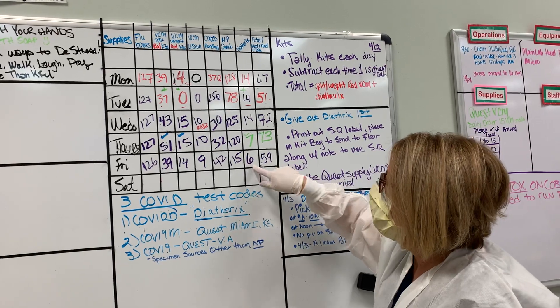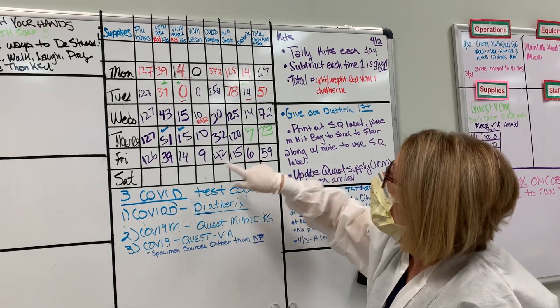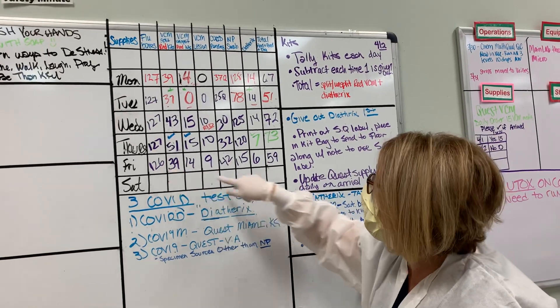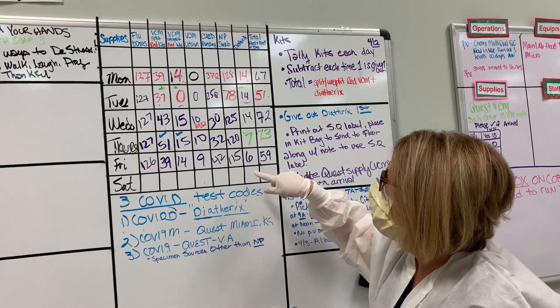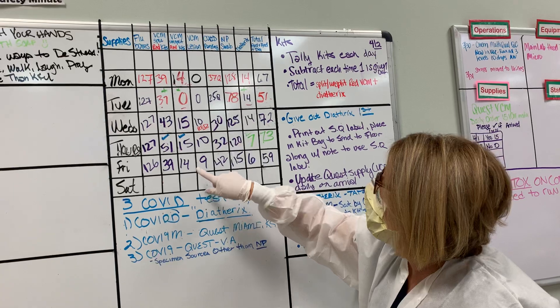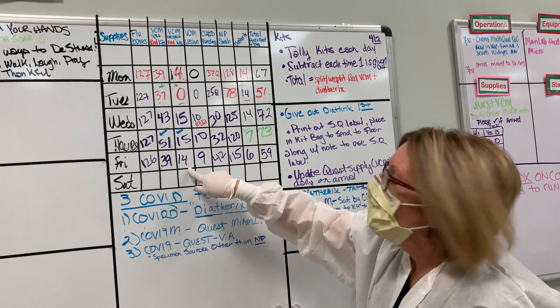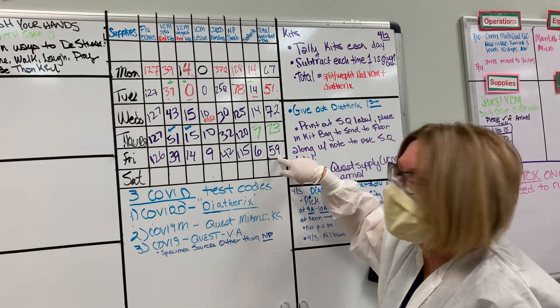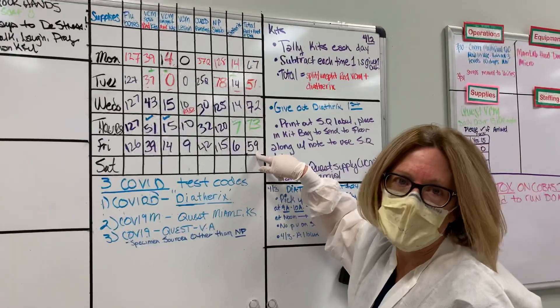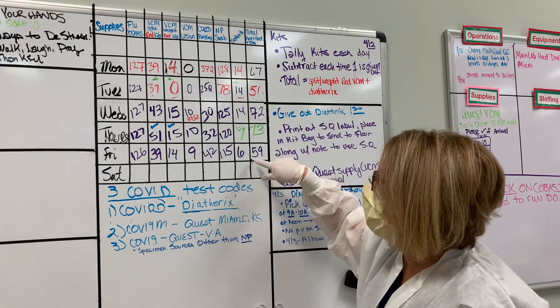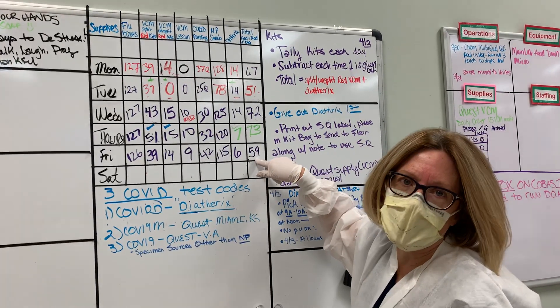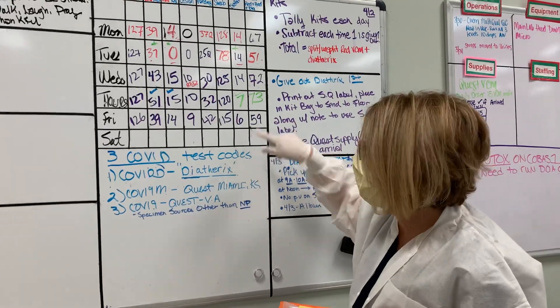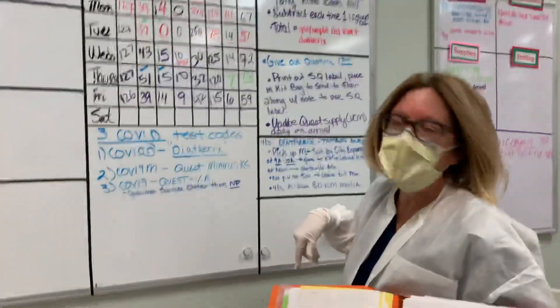And then, the total is actually this number right here. The red, the green. Well, I guess it would be the split and the unsplit, right? Yes. So the potential here is this number, this number, and this number equals 59. But honestly, we have over 60 kits right now we can send out the door, right? That's correct. We have 60 kits. So we'll be updating that every day.